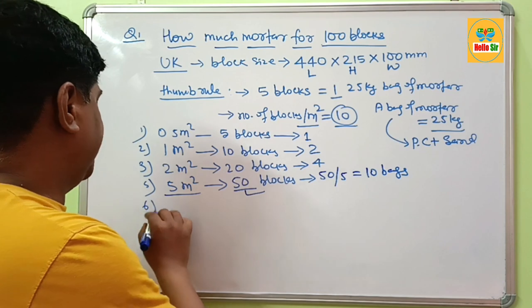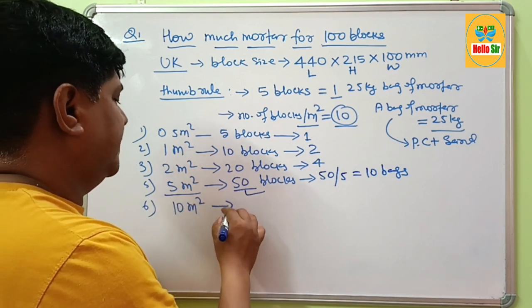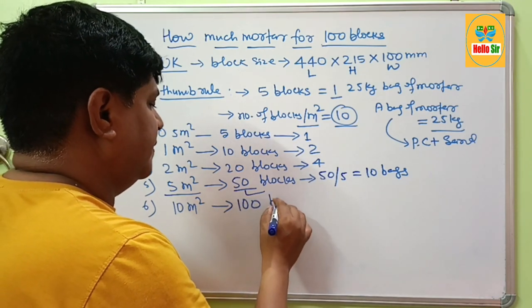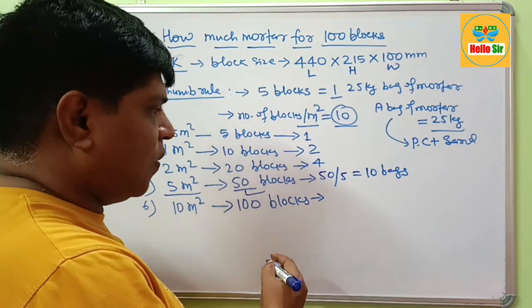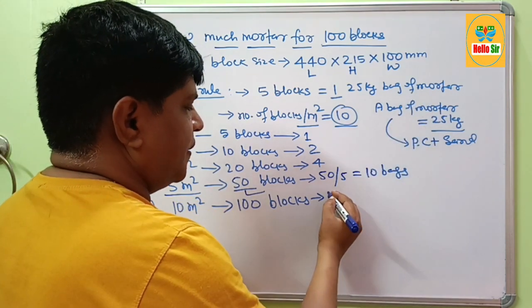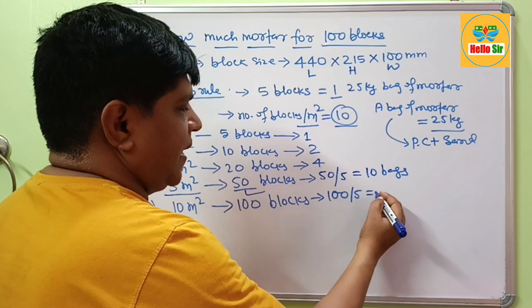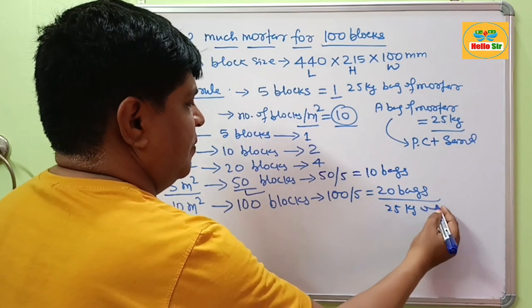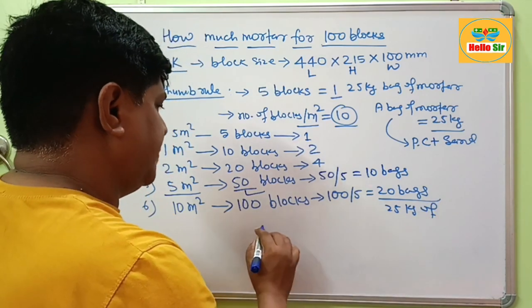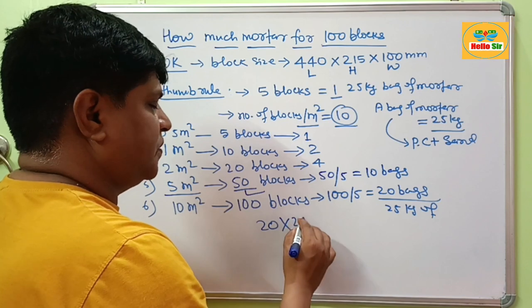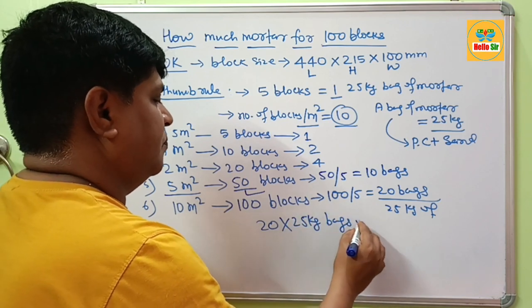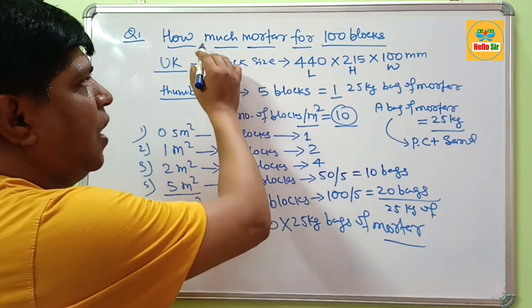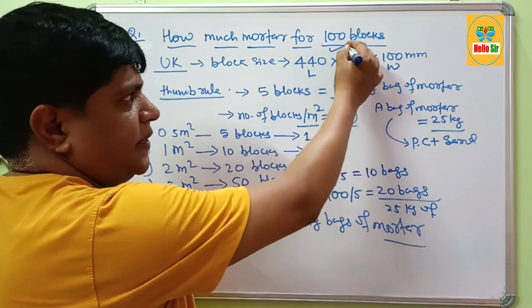If you have a 10 square meter area, that means you need about 100 blocks. For 100 blocks, how much mortar will you require? 100 divided by 5 gives 20 bags of 25 kg mortar. So for 100 blocks, you will need about 20 bags of 25 kg mortar. By this method, you can easily calculate how much mortar is required for any number of blocks.